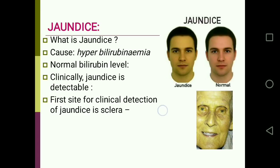Jaundice is the yellowish discoloration of skin and mucous membranes due to increased bilirubin levels. Normal bilirubin level is 0.2 to 0.8 milligrams per deciliter. Clinically, jaundice is detectable when plasma bilirubin exceeds 2 to 3 milligrams per deciliter. The first site for clinical detection of jaundice is the sclera, because sclera has the protein elastin, which has an extremely high affinity for bilirubin.